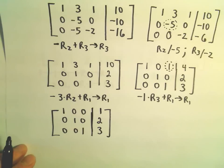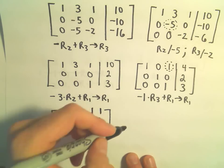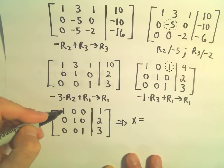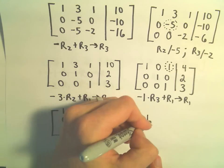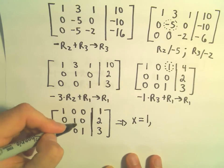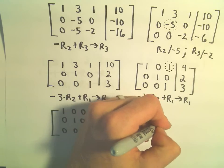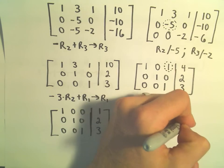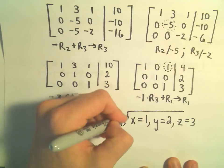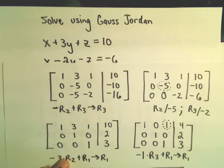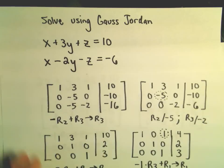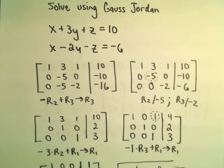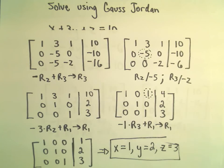Now the left side looks like the identity matrix. This tells me the solution to my system of equations is x equals 1, y equals 2, and z equals 3.